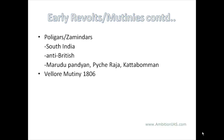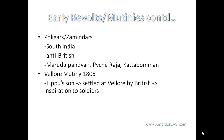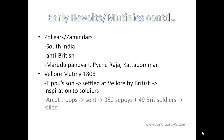In 1806, the Vellore Mutiny took place. It is interesting to note that the British had stationed Tipu Sultan's son at Vellore, who was the inspiration for the soldiers there. The British had to send troops from Arcot, and the ensuing war led to the death of 350 sepoys along with 49 British soldiers.